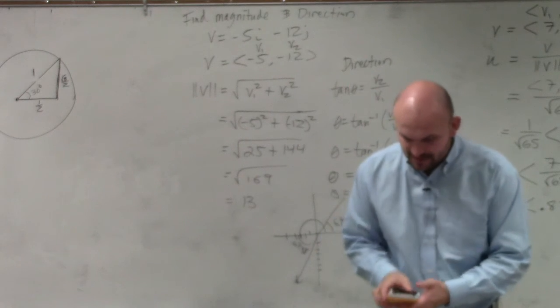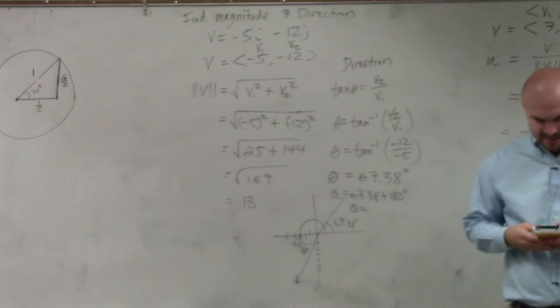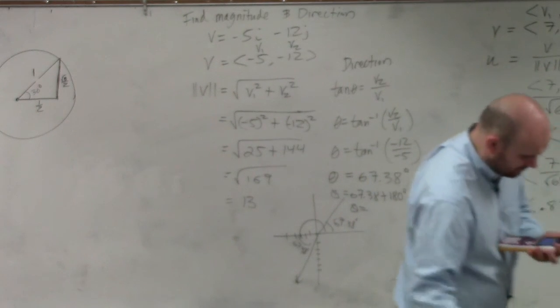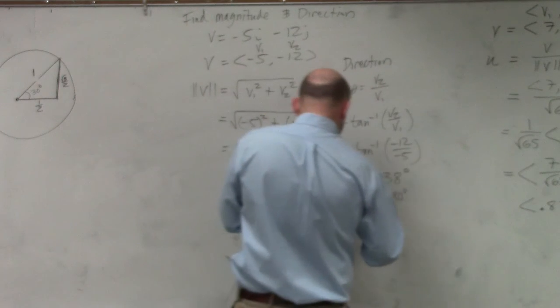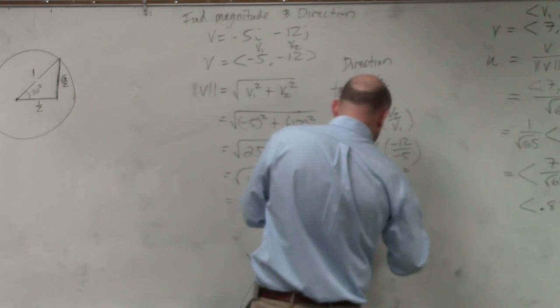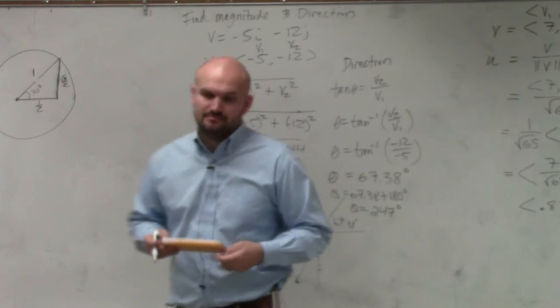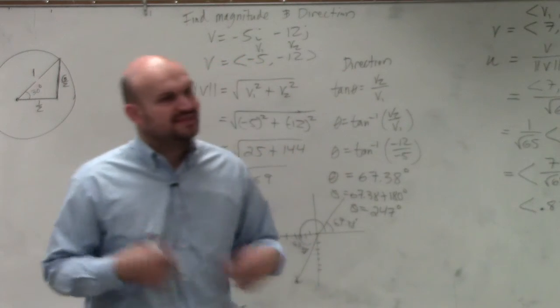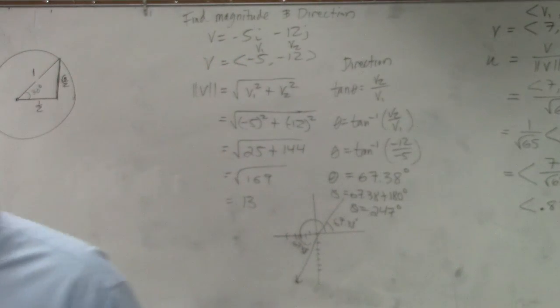So theta is going to equal plus 180 degrees. I'm just going to round to the nearest degree. It's going to be 247 degrees. That is going to be my angle. That's right.